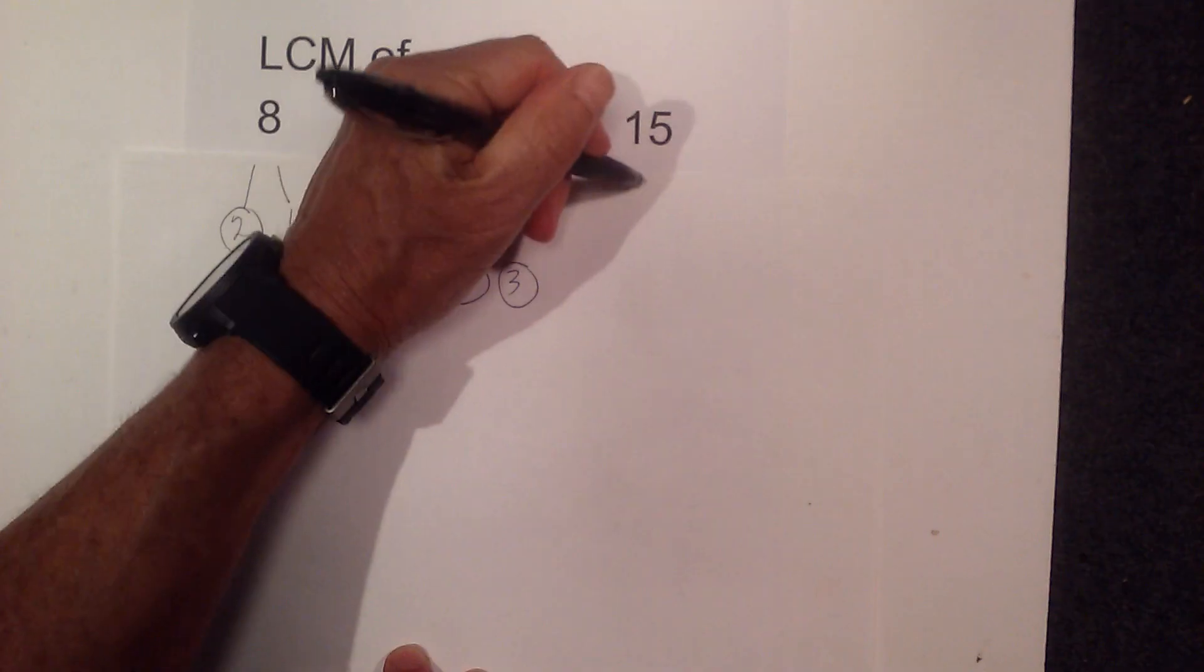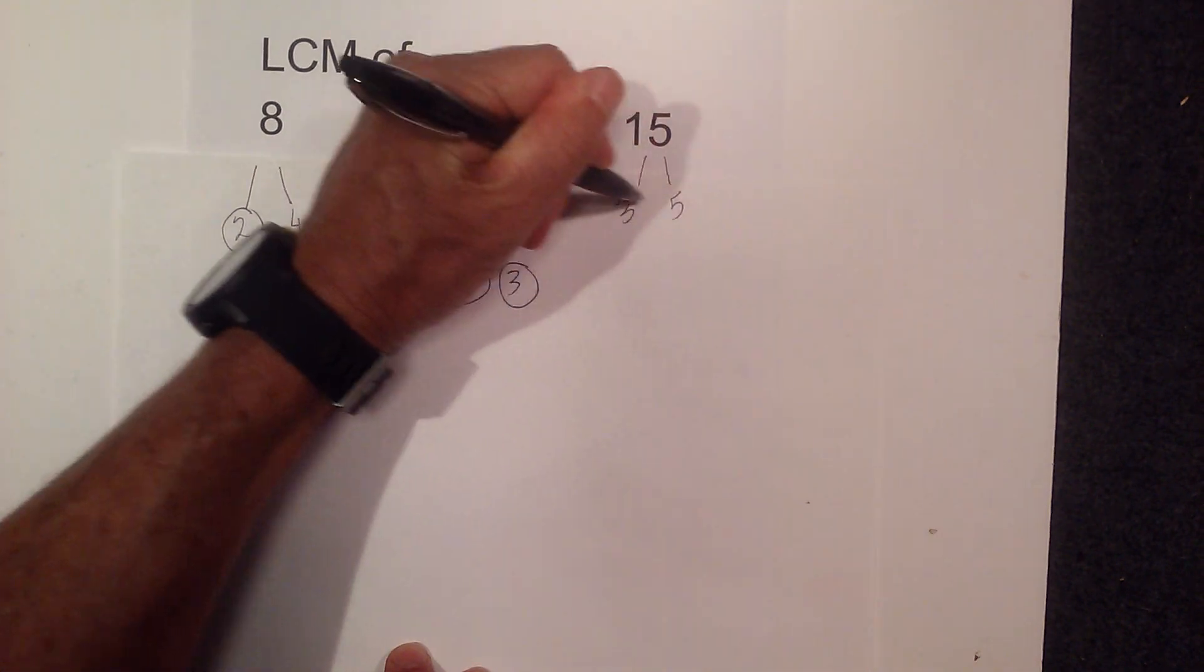So we have the prime numbers of 12 and now for 15 it's pretty easy. 3 and 5.